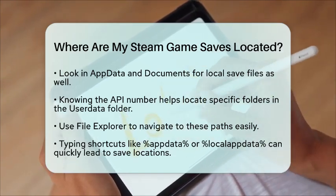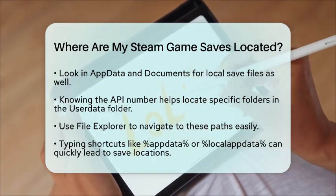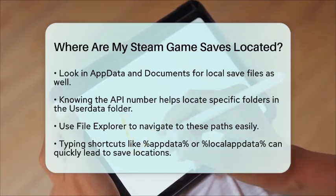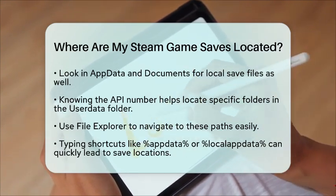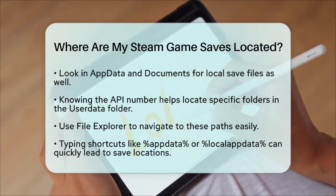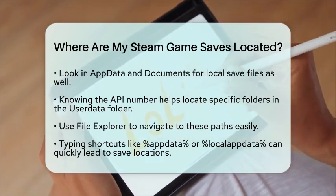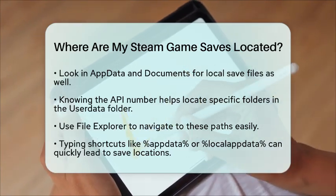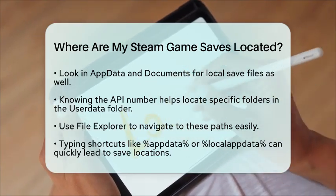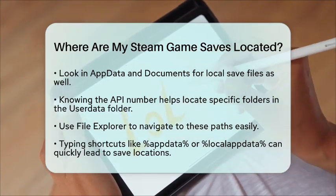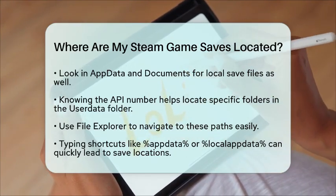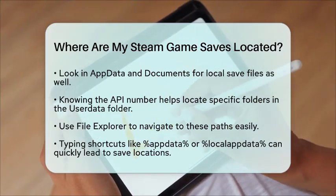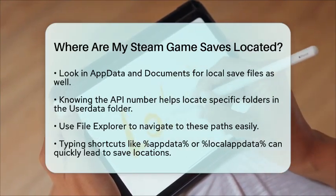You can type in shortcuts like %appdata% or %localappdata% to quickly find the save locations. By knowing where to look, you can easily manage and back up your Steam game saves, ensuring your gaming progress is safe and accessible whenever you need it.